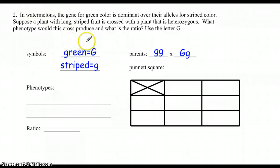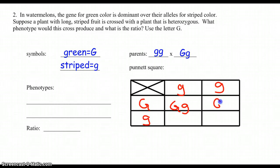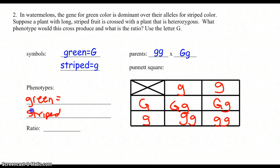Number two, we have watermelons. Green is the dominant allele over striped. Do not forget, the only way that you can have it showing as striped would be homozygous recessive, and the other parent is heterozygous. I've got green and I have striped. Phenotypes — you write out what you have and how many of each. Looking at the first letter, I've got two that are green and two that are striped, so my ratio is two to two.